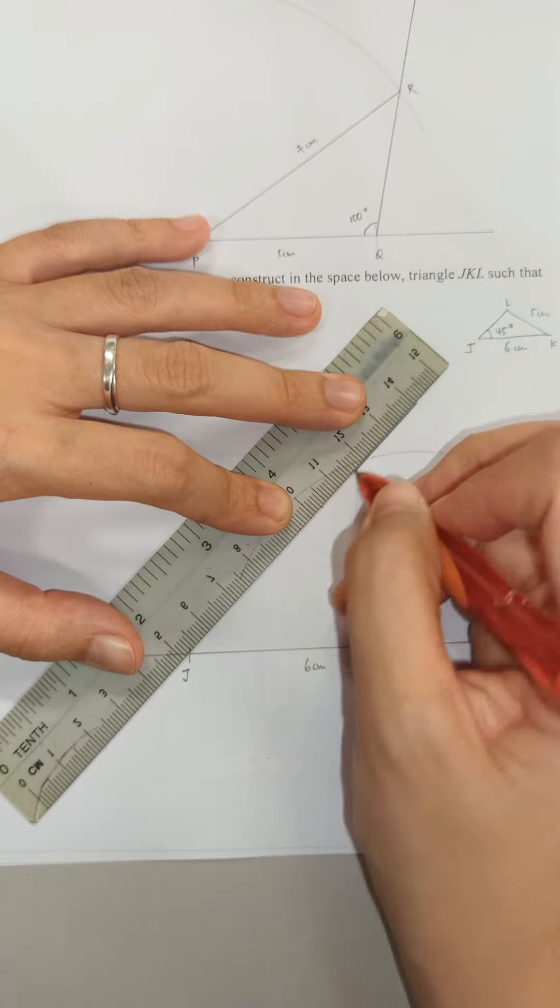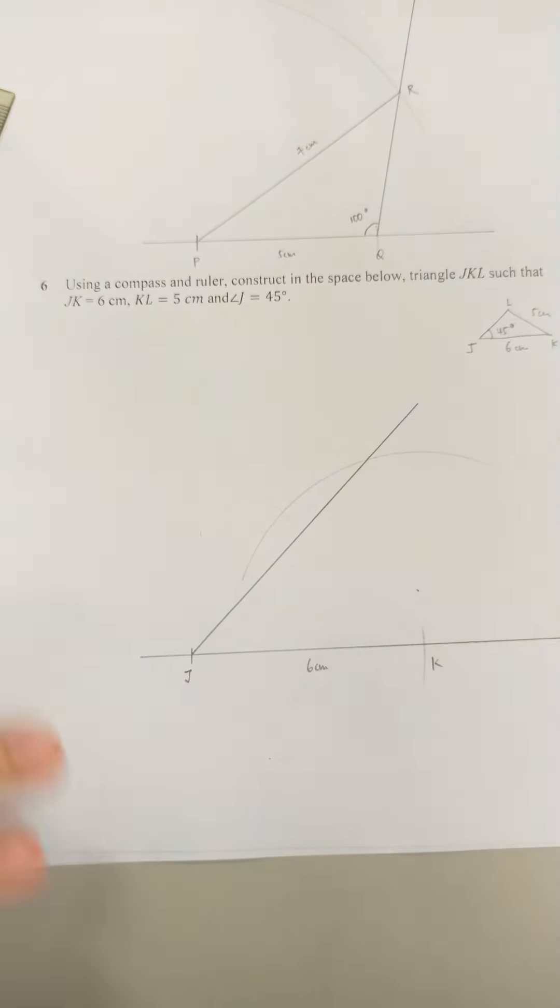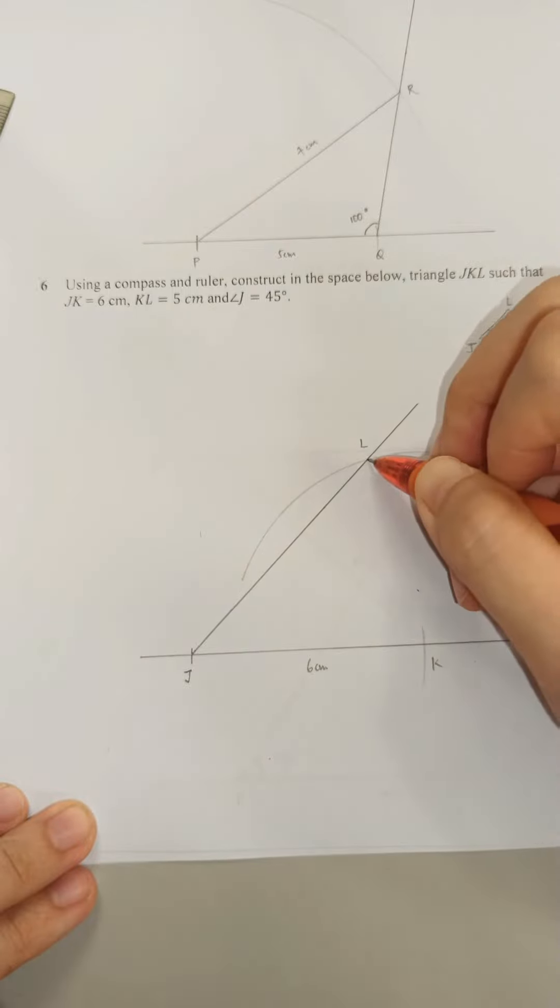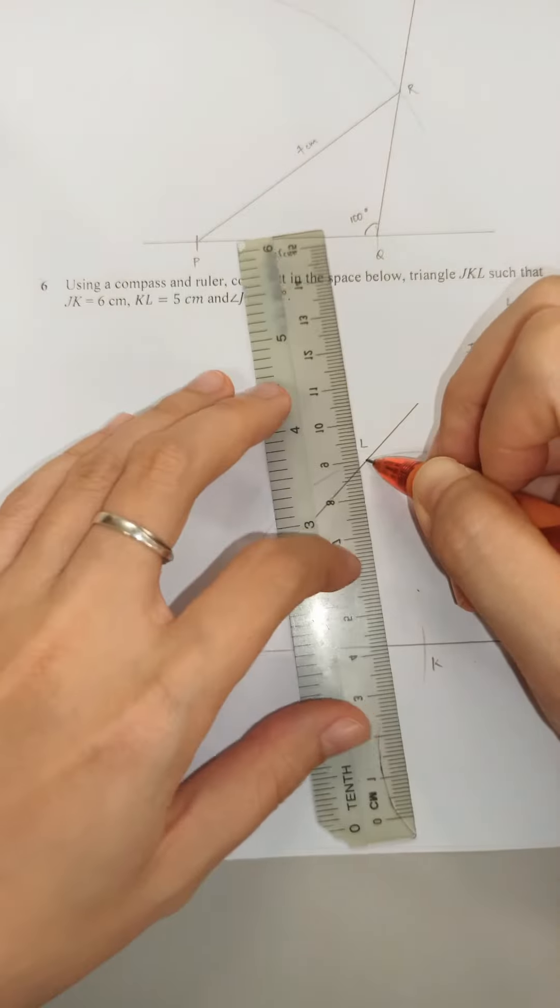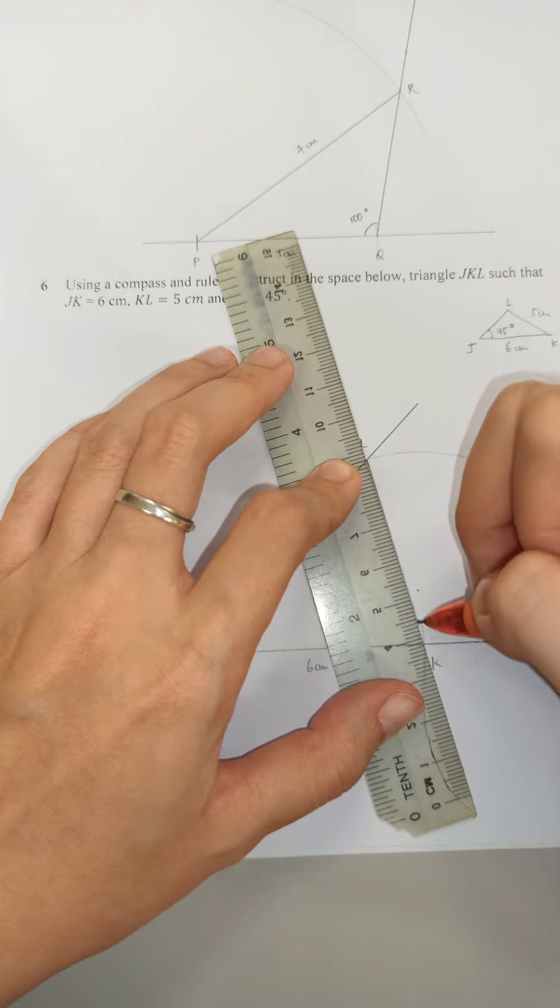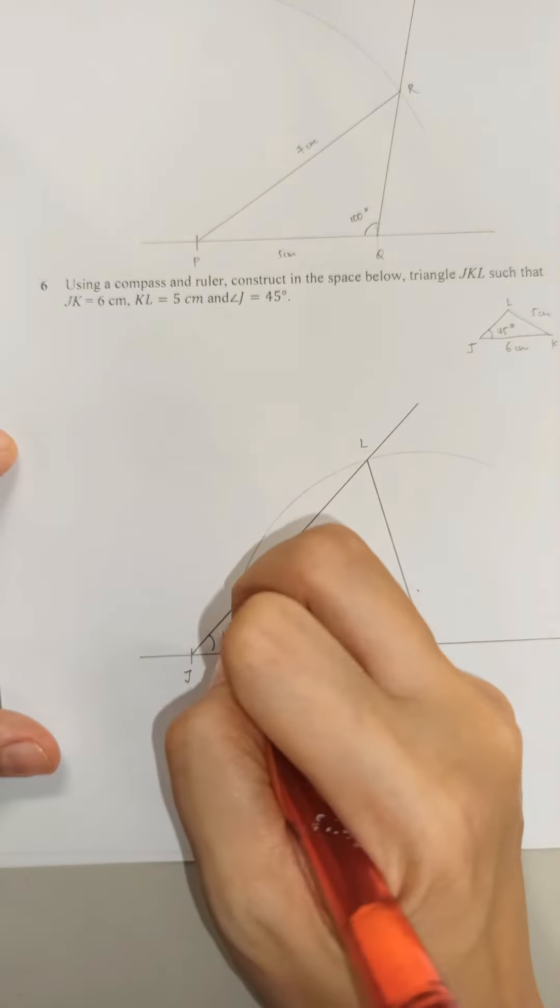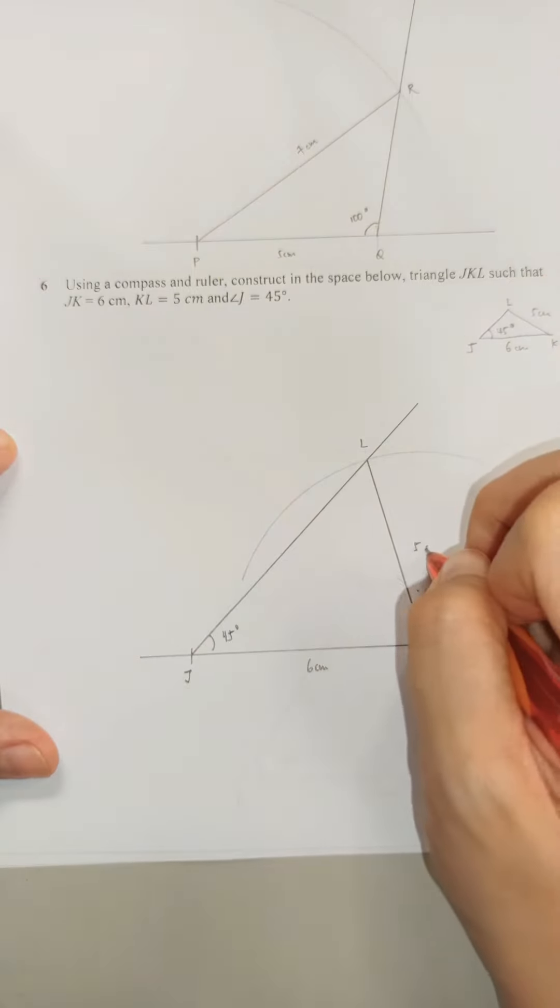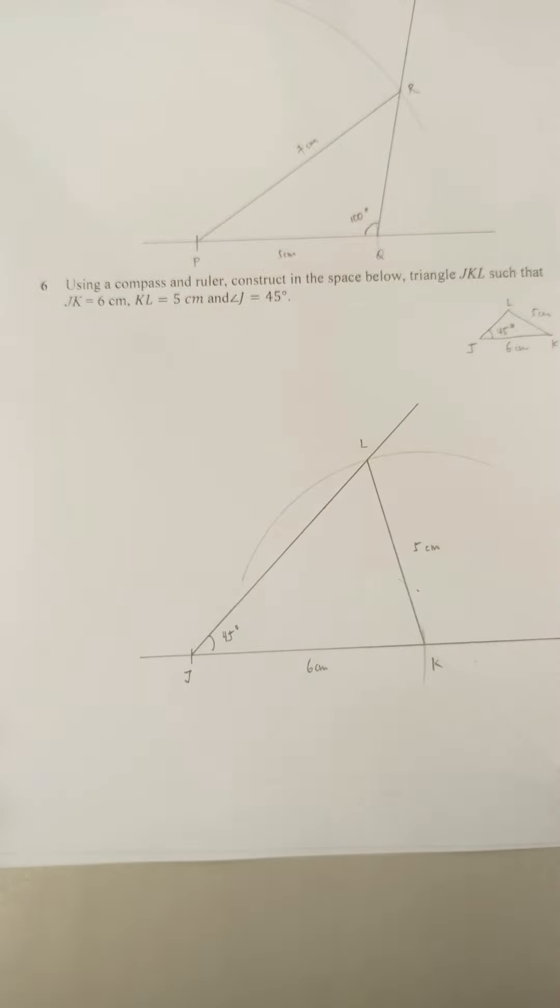Join it to J. Infinity and beyond. Point of intersection, that is point L. Point of intersection L to K. So this is 45 degrees and this is 5 cm. And we are done with our triangle for question 6.